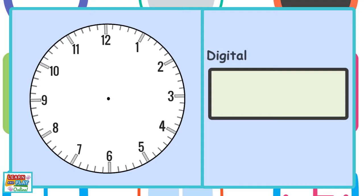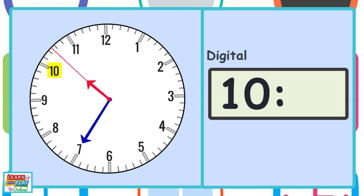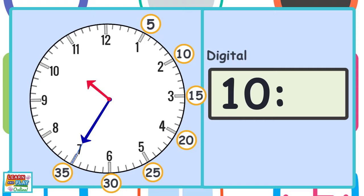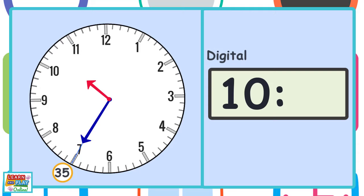Let's try the next one. Remember, we always need to look at the hour hand first. The hour hand is past the number 10, so it must be 10 something. The minute hand is pointing to the line at the number 7. So let's count by 5s around the clock face to see how many minutes has passed the hour: 5, 10, 15, 20, 25, 30, 35. So that means the time is 10:35.